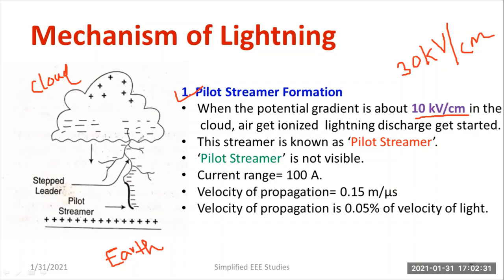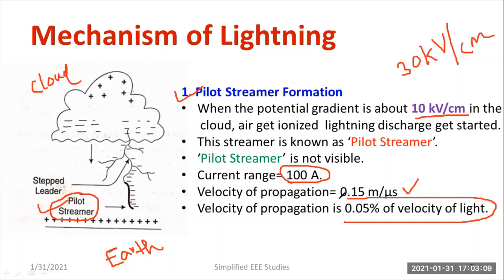The first kind of discharge is called the pilot streamer — it is the first type of streamer formation. It is not visible to the naked eye. The current capacity is approximately 100 amperes. The velocity of propagation is 0.15 meters per microsecond, which is about 0.05% of the velocity of light. This is the first step of the lightning mechanism.